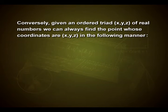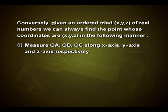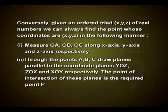Conversely, given an ordered triad (x, y, z) of real numbers, we can always find the point whose coordinates are (x, y, z) in the following manner. First, measure OA, OB and OC along the x-axis, y-axis and z-axis respectively. Secondly, through the points A, B and C, draw planes parallel to the coordinate planes yOz, zOx and xOy respectively. The point of intersection of these planes is the required point P.